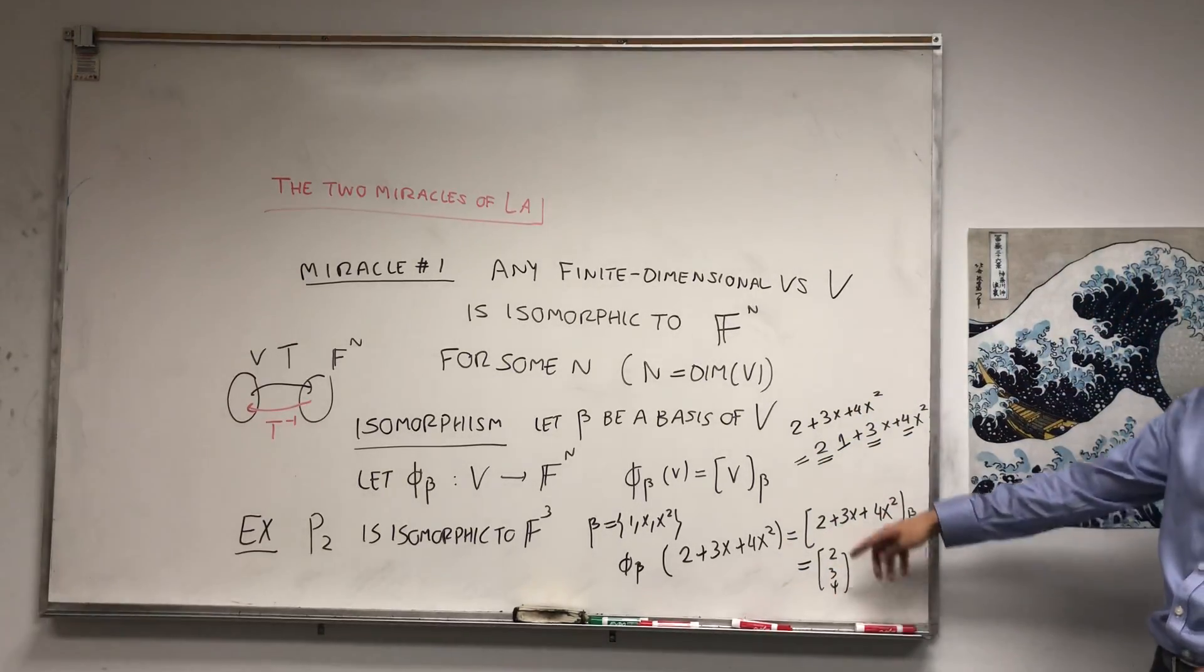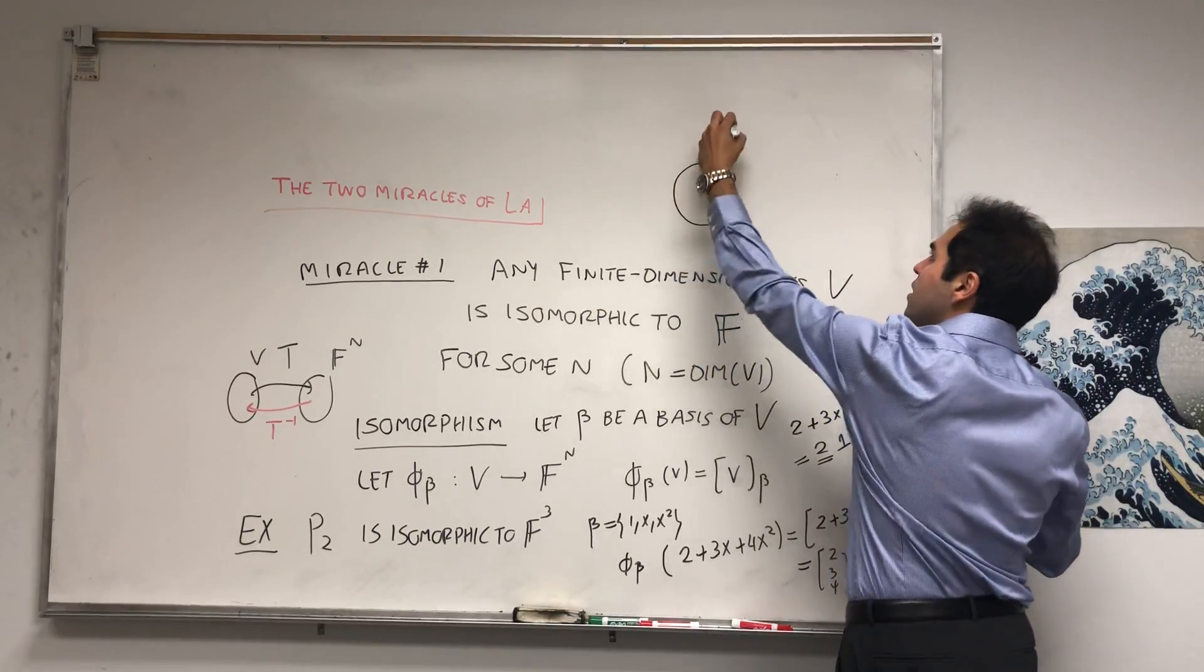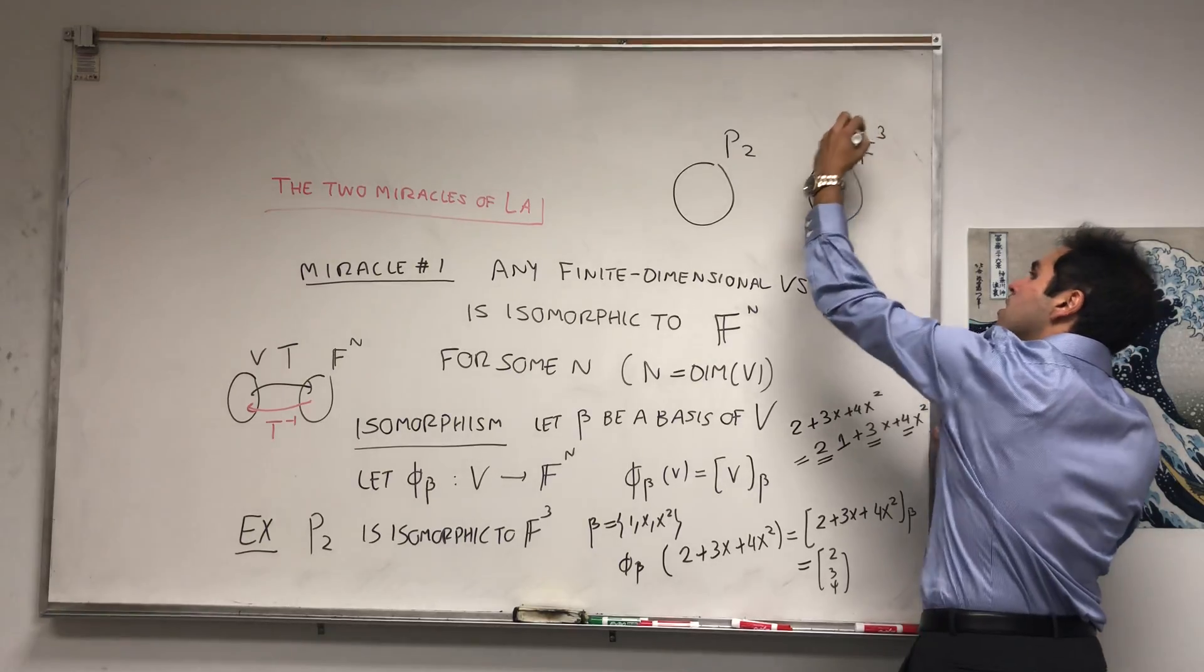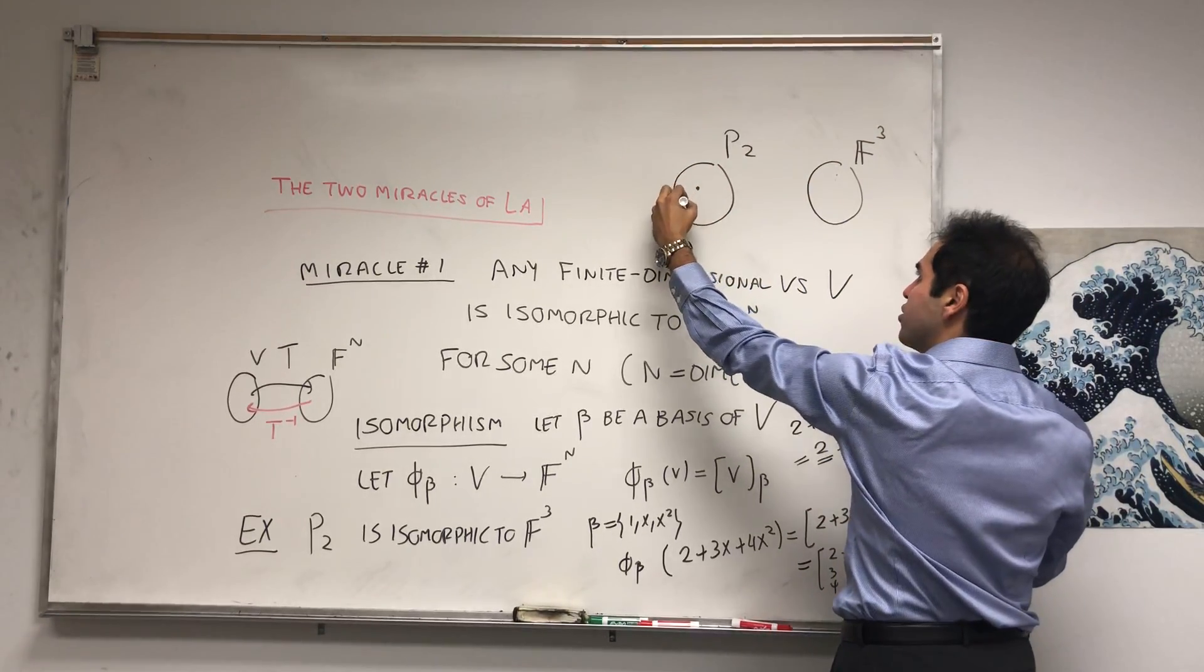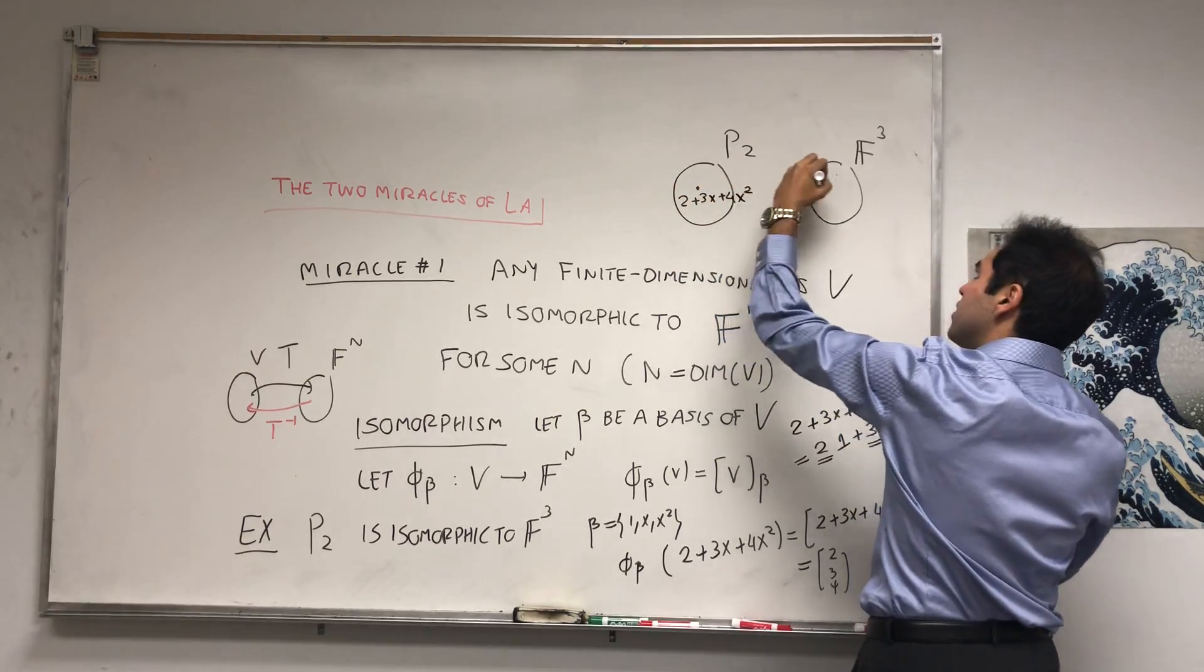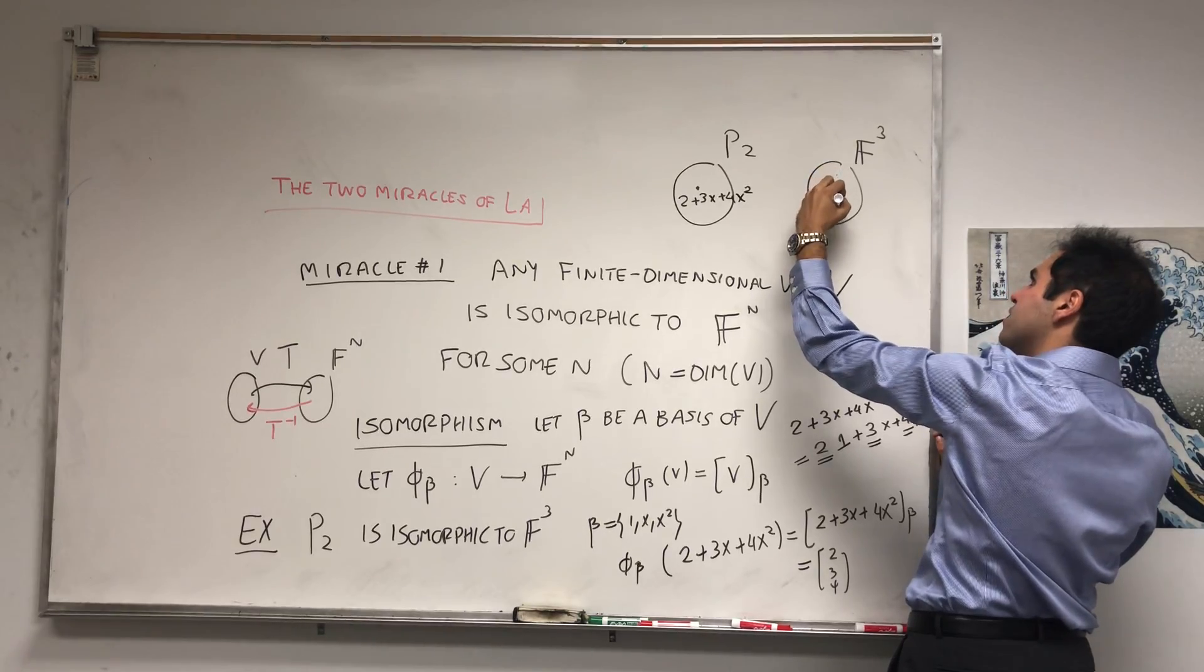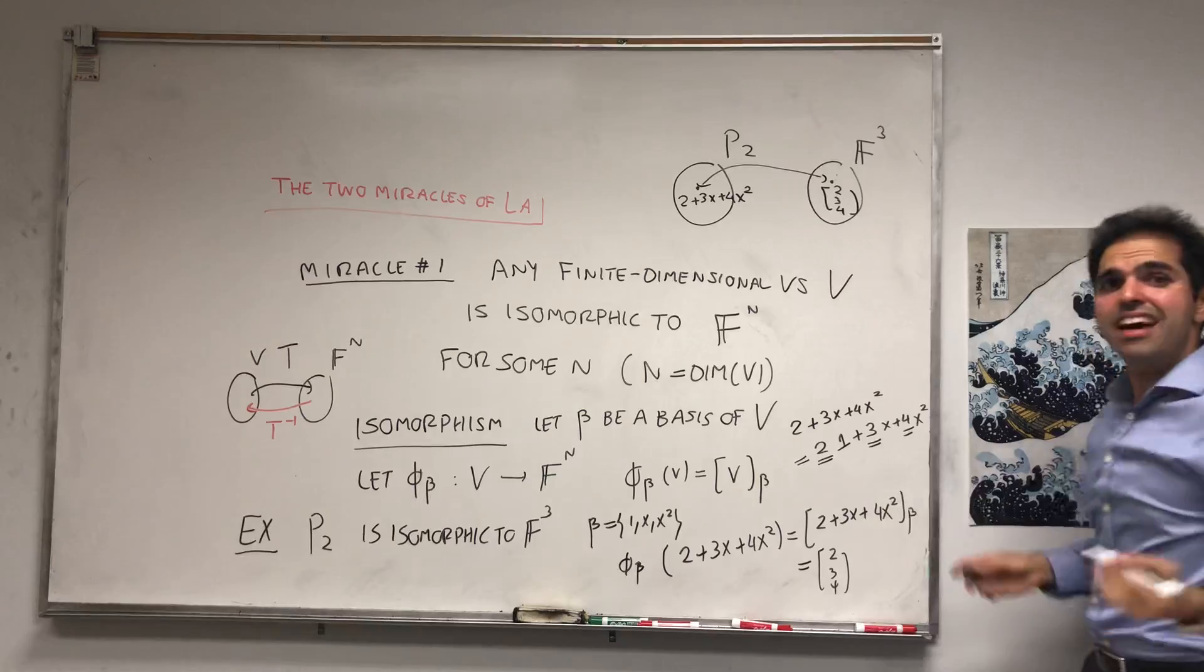And you see, in that way it's very easy to go back and forth from P2 to F^3 because if you have, for example, this really abstract vector 2 + 3x + 4x^2, you can attach the concrete vector (2, 3, 4) here. How cool is that?